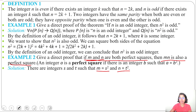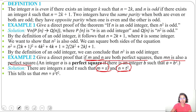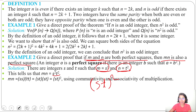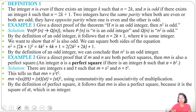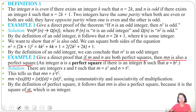Since m equals s squared and n equals t squared, we have m times n equals s squared times t squared, which equals (st) squared. So m times n is a perfect square, as it is the square of st. By definition of perfect square, it follows that m times n is also a perfect square, because st is an integer and m times n equals (st) squared. So if P is true — both m and n are perfect squares — then Q is also true — m times n is a perfect square.